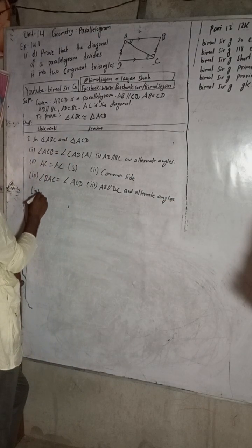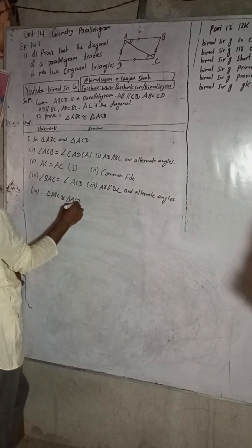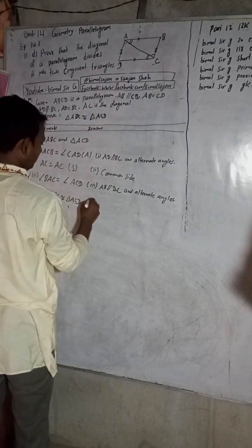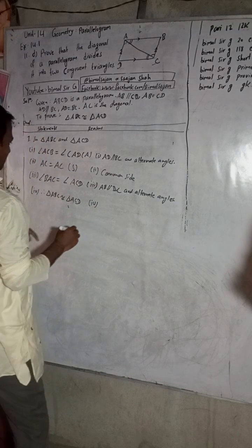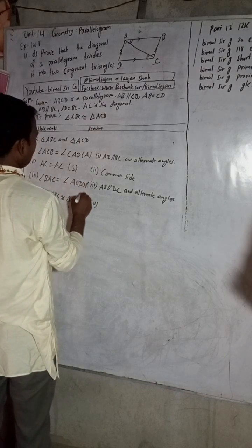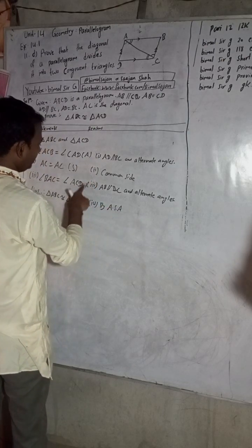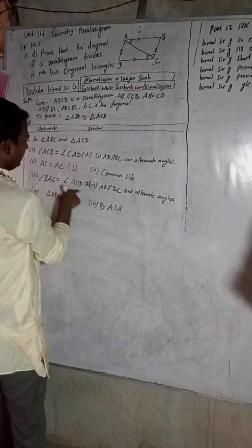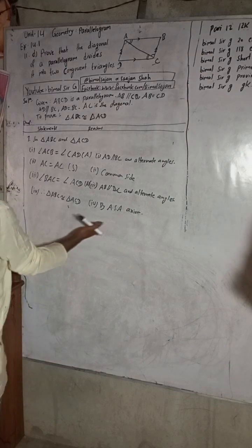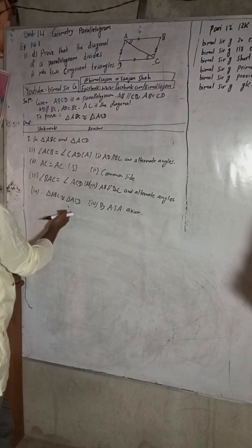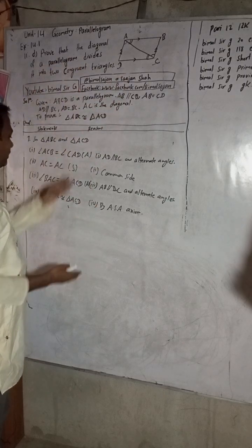Therefore, Triangle ABC is congruent to Triangle ACD by Angle-Side-Angle (ASA). This is proved. We have shown that diagonal AC of this parallelogram divides it into two congruent triangles — Triangle ABC is congruent to Triangle ACD. You can also show the same using the other diagonal: Triangle BCD is congruent to Triangle ABD.